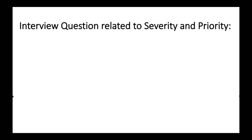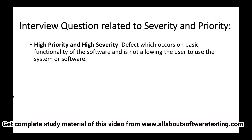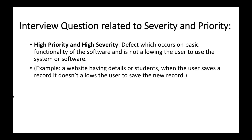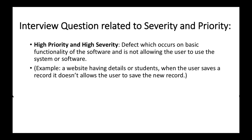Now we will study some interview questions related to severity and priority. The first question is: give an example of high priority and high severity. Defects occurring on basic functionality that prevent the user from using the system fall here. For example, a student records website that does not allow the user to save new records — it is high priority because saving is critical, and high severity because the system is failing completely.